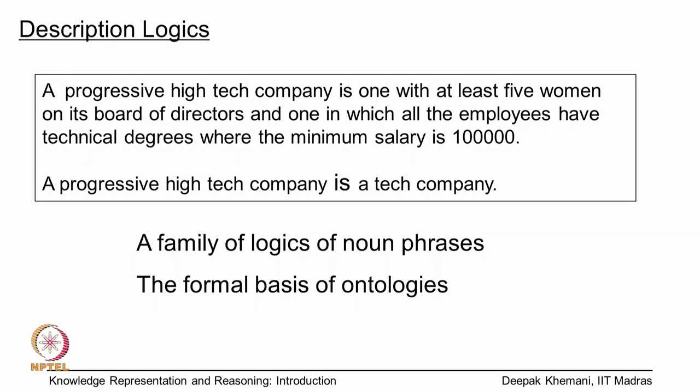We also look at something called description logics. For example, you can say that a progressive high-tech company is a high-tech company — we describe noun phrases. It is a logic of noun phrases and it is basically the formal basis of ontology. We can give a definition of a progressive high-tech company and a definition of a tech company, and then say that this is a subclass of that.